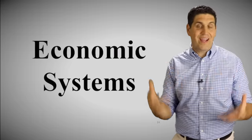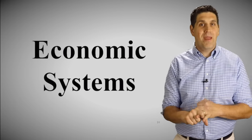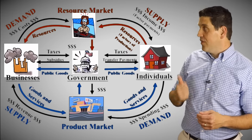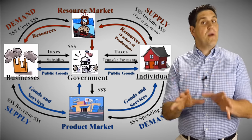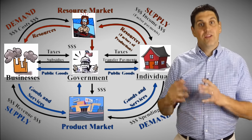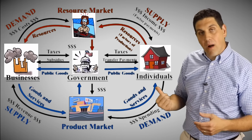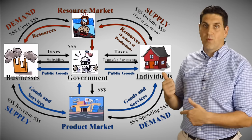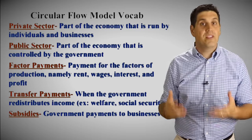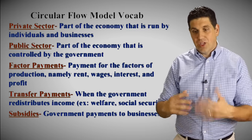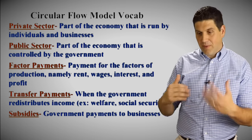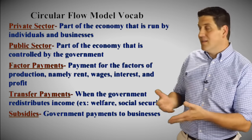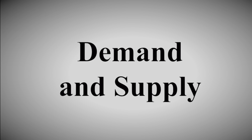In this unit, you also get a basic overview of different economic systems like the free market system, capitalism, command economy, and mixed economy — we focus on capitalism. You learn the circular flow model, which shows businesses, individuals, and the government and how they interact. Businesses both sell products and buy resources. There's a product market and a resource market. Individuals buy products and sell their resources. You also learn vocab like transfer payments — when the government pays individuals like welfare but not to buy anything — subsidies when the government provides businesses money to produce more, and factor payments when businesses pay individuals for their resources.